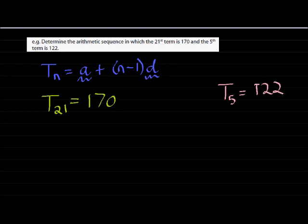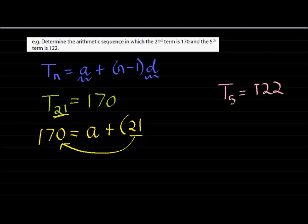The 21st term would therefore be, taking this, 170 equal to alpha, which I don't know, plus... Now n, according to this, is 21, because the 21st term is equal to 170, minus 1 times my constant difference.